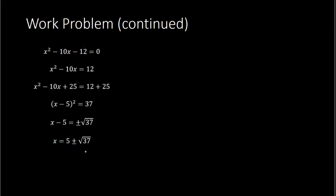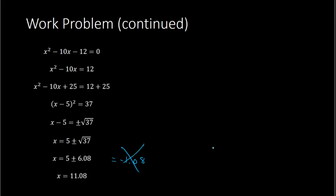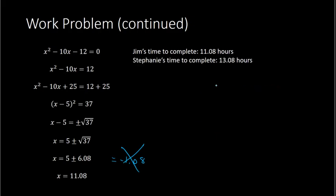We see all of that work typed up here. The square root of 37 is approximately 6.08. So x equals 5 plus 6.08, which is 11.08, or x equals 5 minus 6.08, which is negative 1.08. Remember the context: x is the time it takes Jim to complete the job alone, so a negative 1.08 hours doesn't make sense. Therefore Jim's time is approximately 11.08 hours, and Stephanie's time — two hours more — is approximately 13.08 hours.